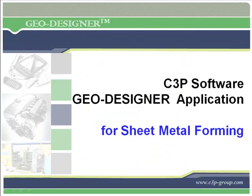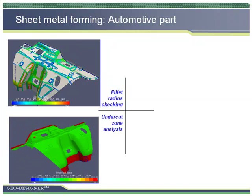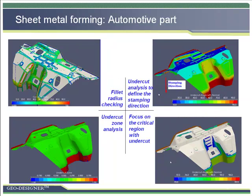We can also look at a few examples in sheet metal forming, which can also use GeoDesigner to support the design. This is an example of a vehicle floor made by sheet metal forming. GeoDesigner can be used for stamping direction definition and fillet radius checking. The best stamping direction can avoid undercut, also with a minimum stroke. In GeoDesigner, both the undercut zone and undercut angle can be analyzed.